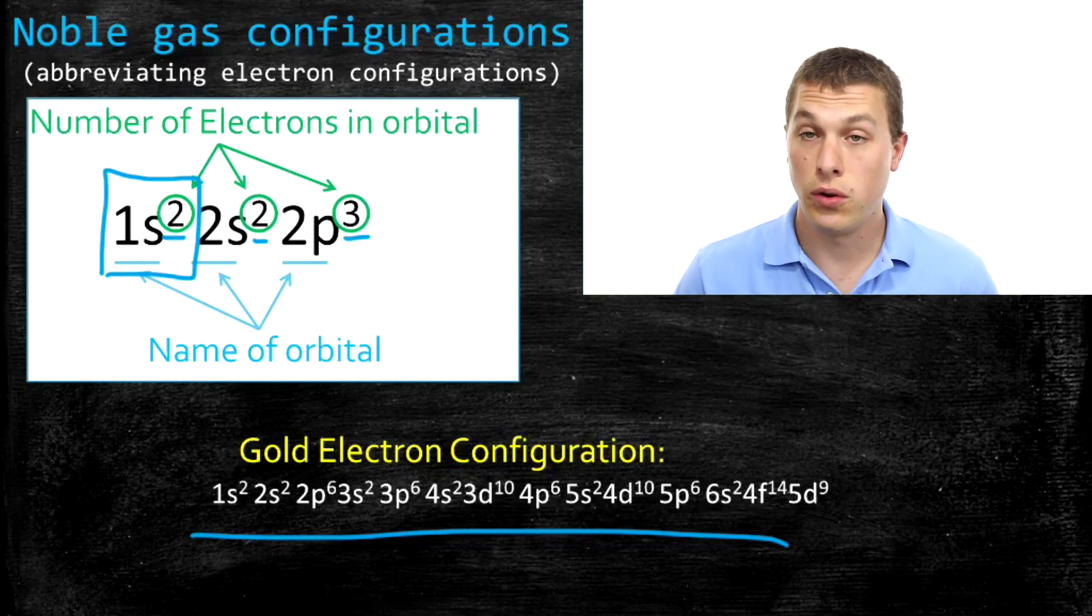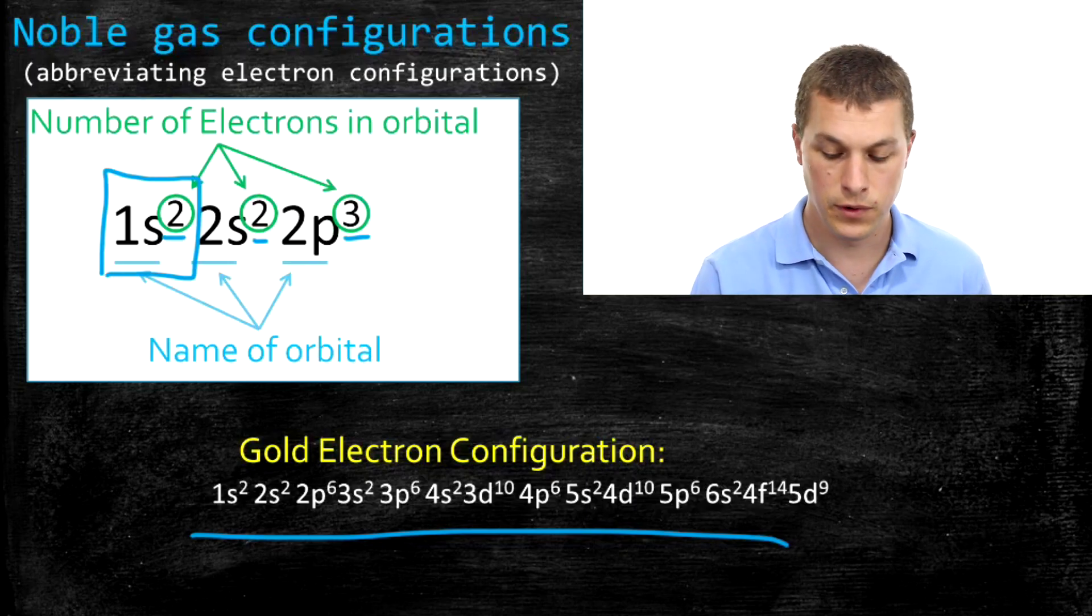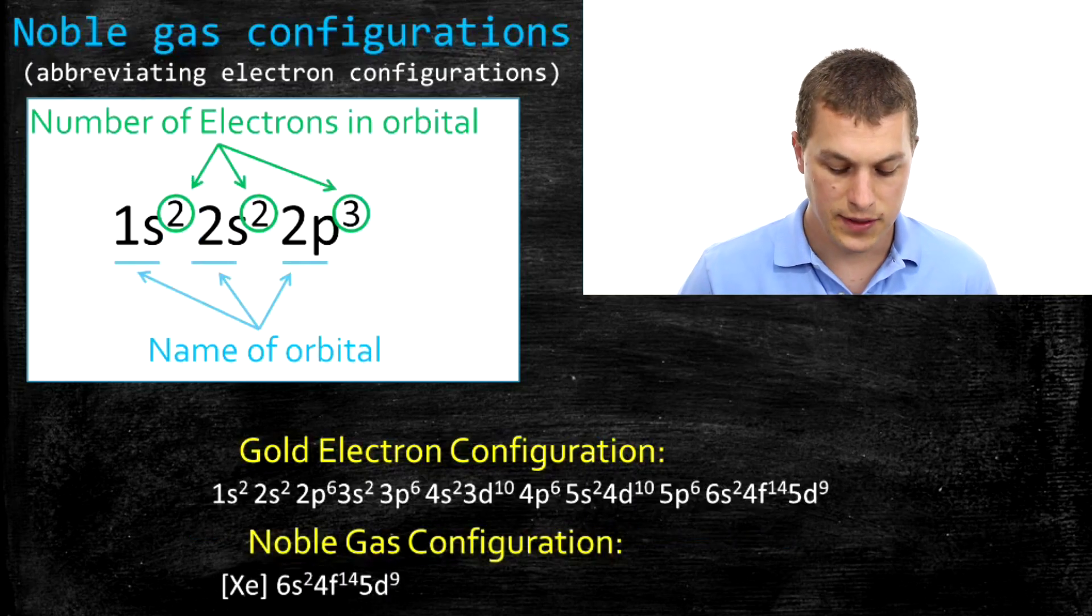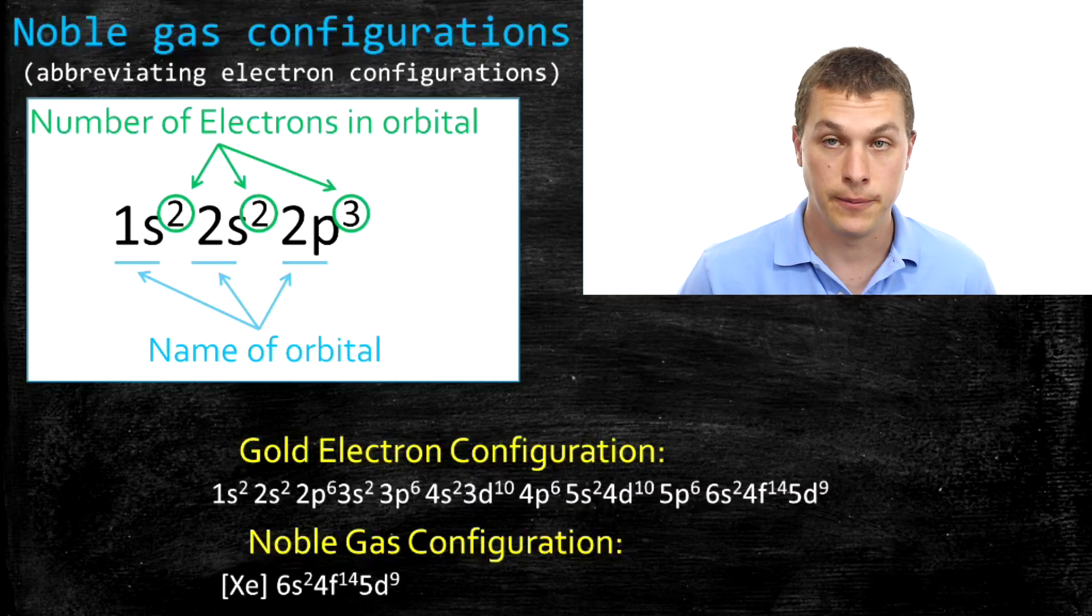So if we have this really long ugly gold electron configuration, which tells us where all the electrons go, what does it look like if we use noble gas configurations? Well, much better. That's the noble gas configuration of gold. You can see that it's written much more succinctly. And you don't have to spend nearly as much time staring at the periodic table writing electron configurations.